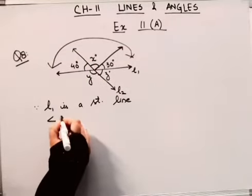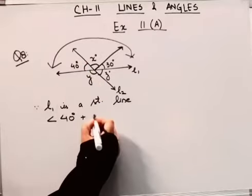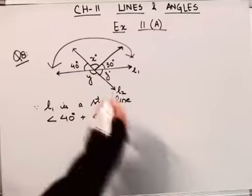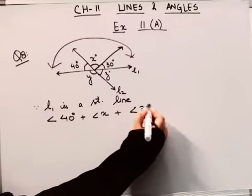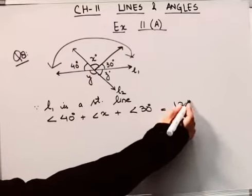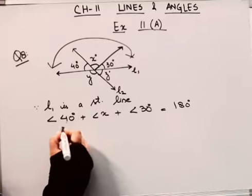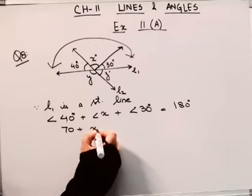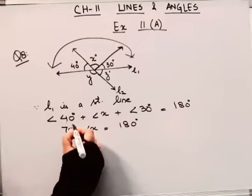That means angle 40 degrees plus angle x, this angle, plus again 30 degrees. These three will sum to 180 degrees. So it becomes 40 plus 30 is 70 plus angle x equals 180 degrees.